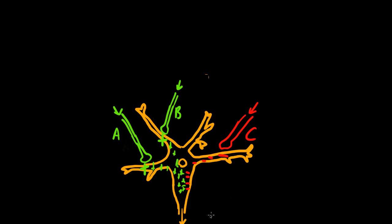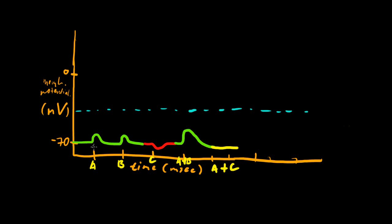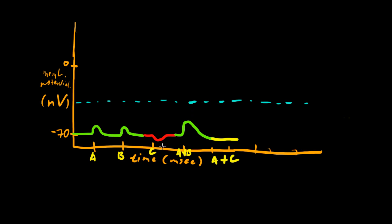Now, if we did say A and C at the same time, then we might get something like this. Pretty much nothing. Because the EPSP is going to be cancelled out by the IPSP. So pretty much no change. So these are examples of spatial summation.